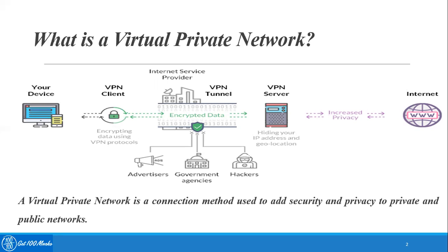From the diagram you can make out that when you are sending or looking for information from the internet, your device should be connected to a VPN so that the VPN client will start encrypting your data using VPN protocols. The information will then pass through a tunnel which the VPN creates, so your information is not roaming around the open cloud of the internet — it passes through a secure tunnel created by VPN.